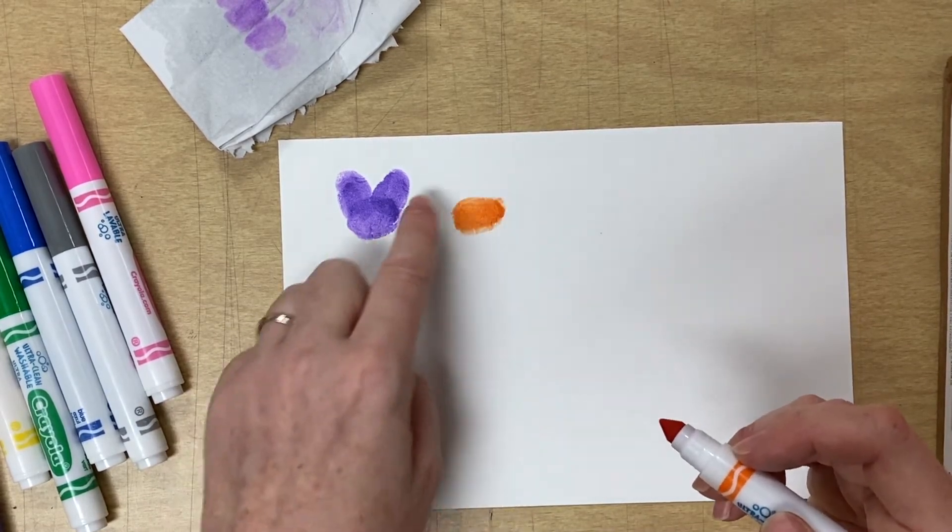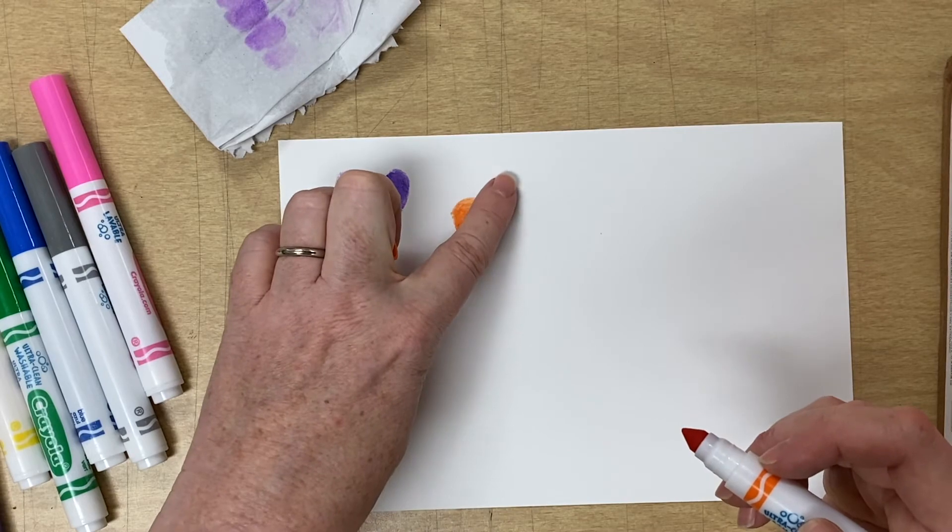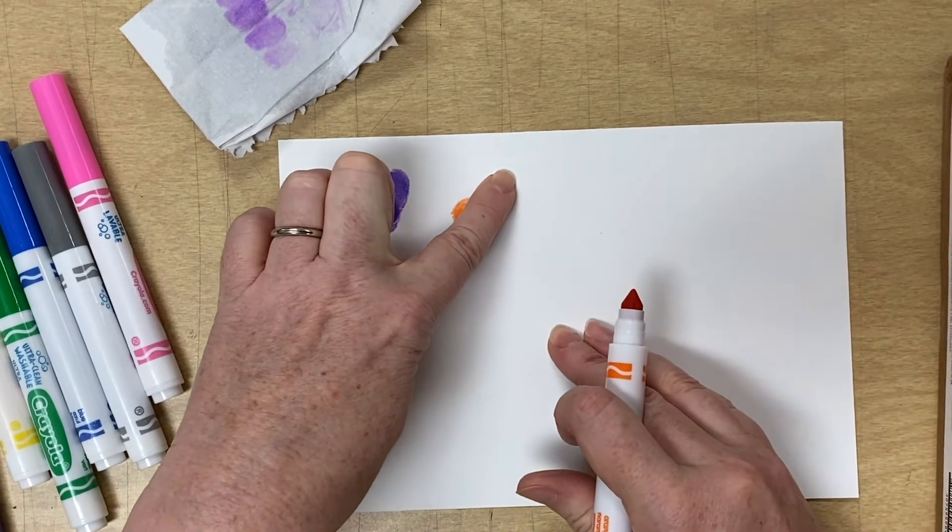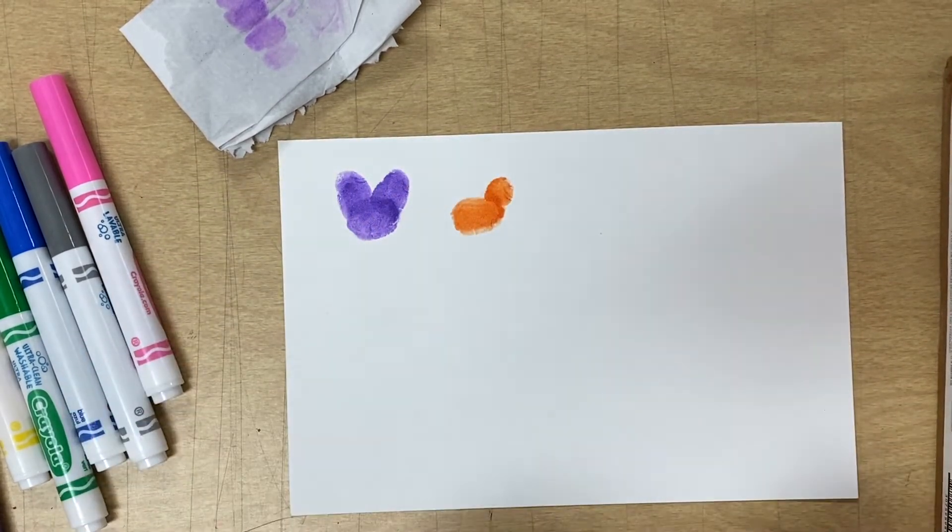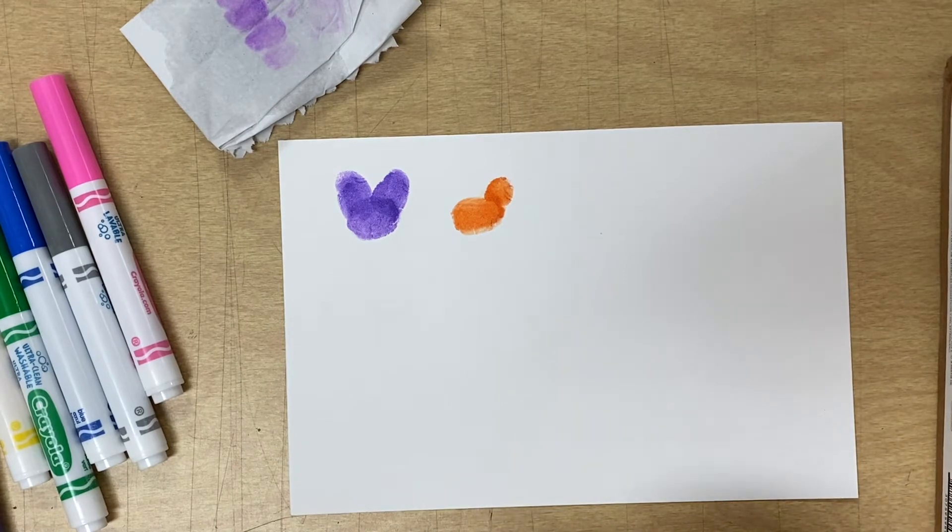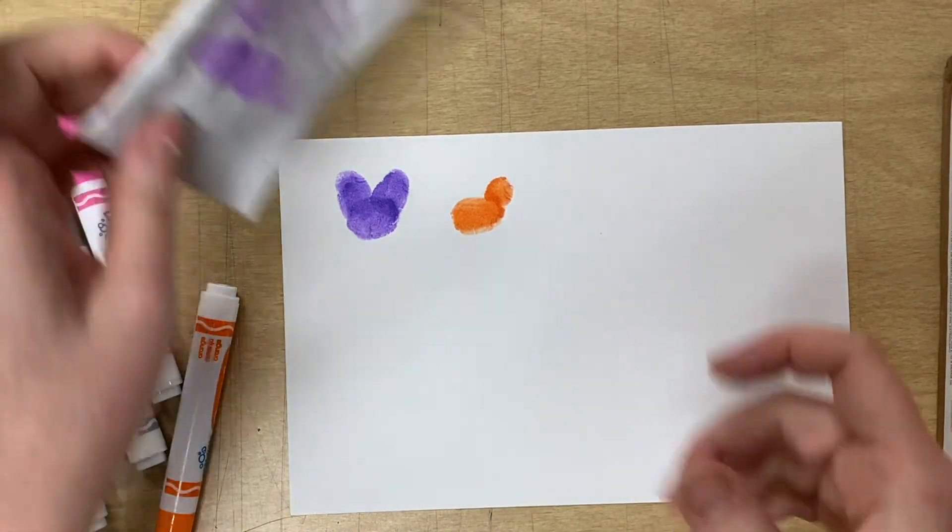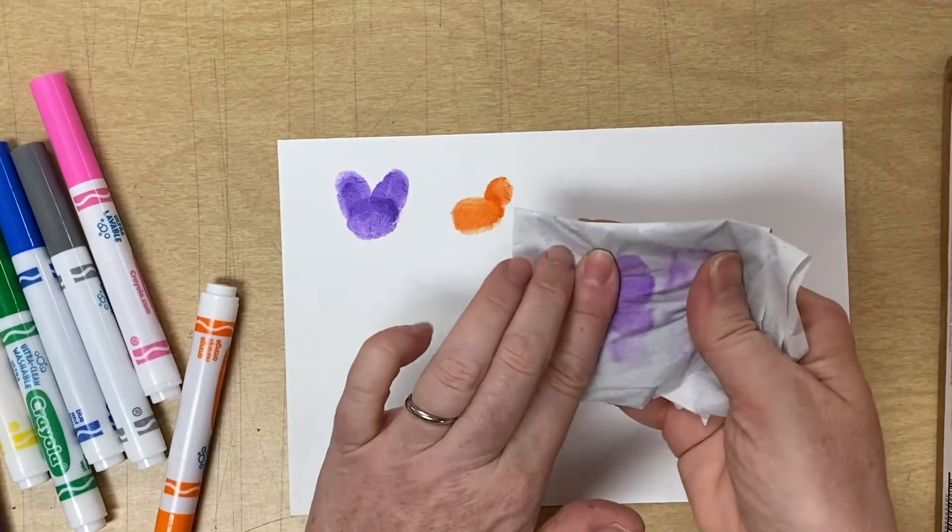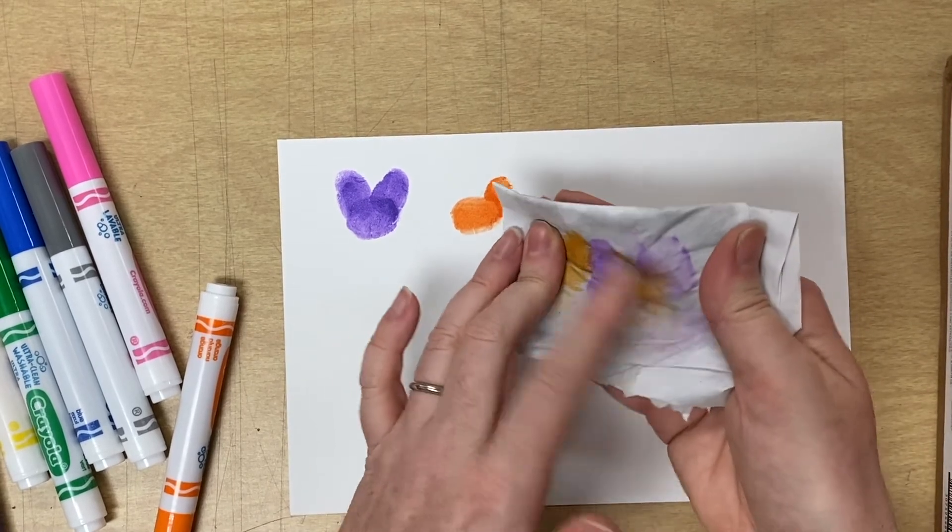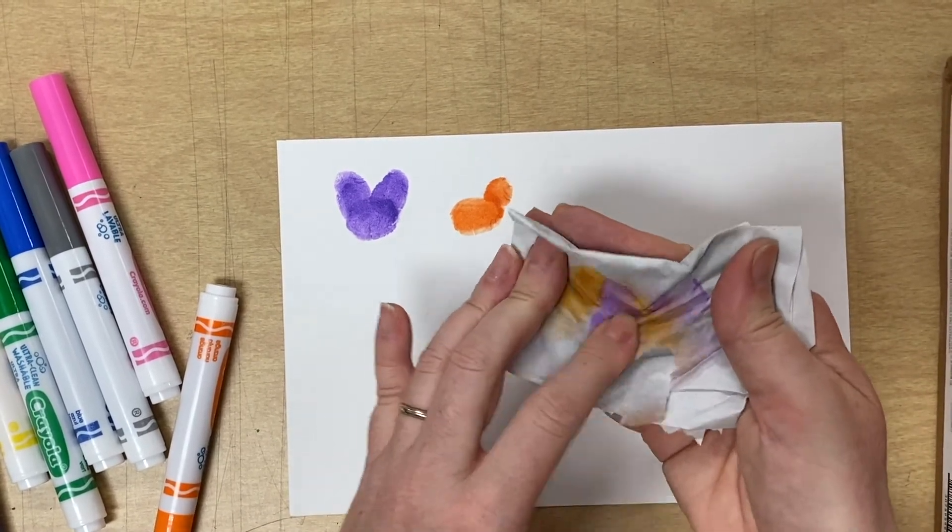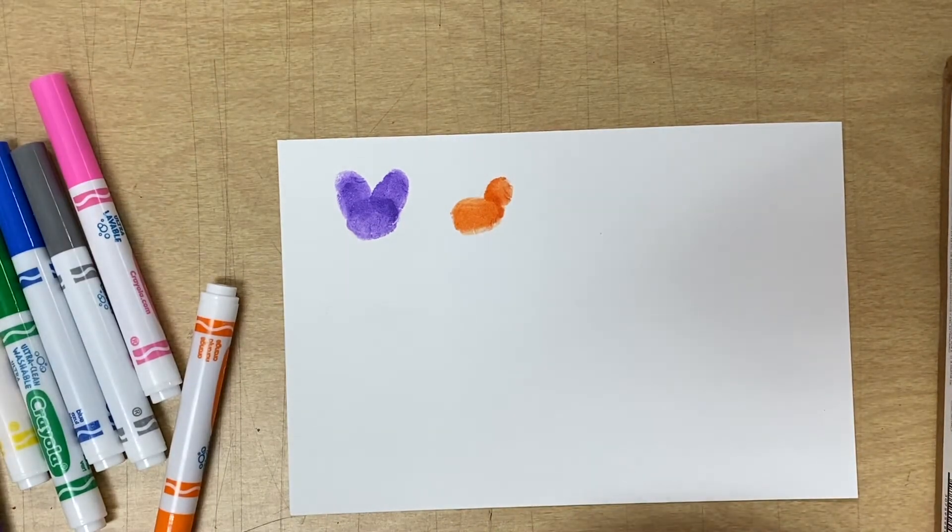I think I'll make a cat, so that'll be the body. I just kind of colored a circle shape for the head. And then I'll clean my finger. Doesn't look very much like a cat yet.